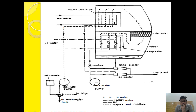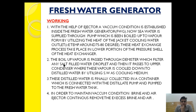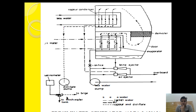The condensed distillate water is collected in a tray provided just beneath the condenser. This collected water is taken out with the help of a distillate pump. The distillate water is finally pumped to the fresh water tank. In order to maintain vacuum condition, the brine and air ejectors continuously remove brine and air.